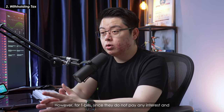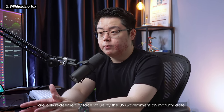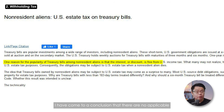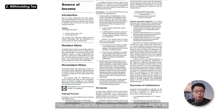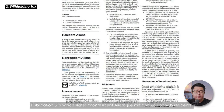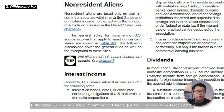However, for T-bills, since they do not pay any interest and are only redeemed at face value by the US government on maturity date, after extensive research I have concluded there are no applicable withholding taxes on income from T-bills. You can see this in IRS Publication 519, page 11, which states that US source interest income for non-resident aliens includes interest on bonds and notes — notice they didn't mention treasury bills. That probably means we don't have to pay, but feel free to comment if you understand it otherwise. I'm not a qualified tax advisor, so I recommend you read about it online and verify my research.